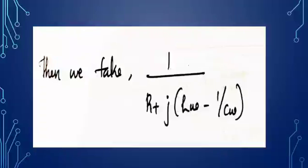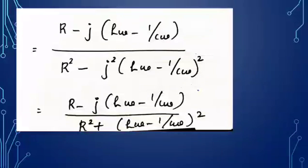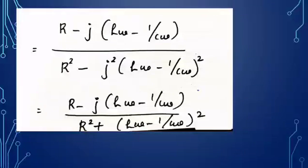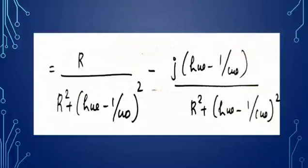We multiply numerator and denominator by the complex conjugate, giving [R − j(ωL − 1/ωC)] in the numerator. The denominator becomes R² + (ωL − 1/ωC)², since j² = −1. This can be written as R/[R² + (ωL − 1/ωC)²] minus j(ωL − 1/ωC)/[R² + (ωL − 1/ωC)²].